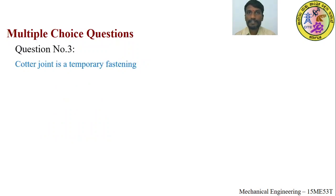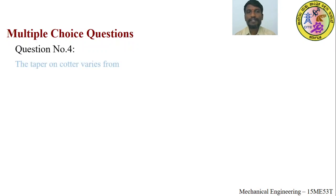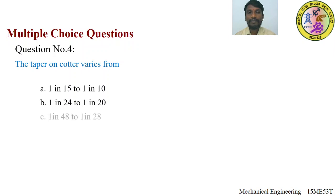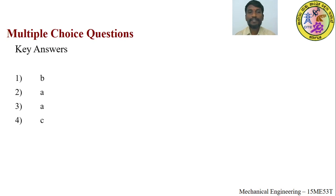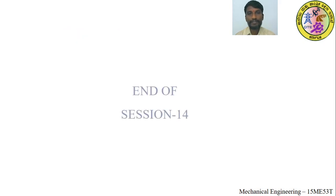MCQ Question 3: The cotter joint is a temporary fastening — True or False? Answer: (a) True — it can be easily assembled and disassembled. Question 4: The taper of the cotter varies from — (a) 1 in 15 to 1 in 10, (b) 1 in 24 to 1 in 20, (c) 1 in 48 to 1 in 28, (d) 1 in 32 to 1 in 24. Answer: (c) 1 in 48 to 1 in 28. Answer key: 1-b, 2-a, 3-a, 4-c.